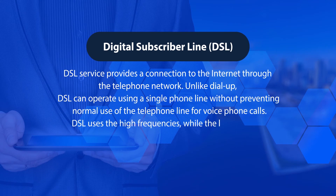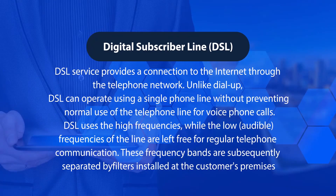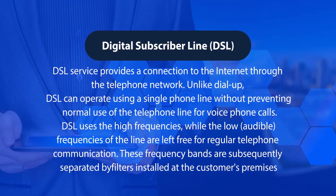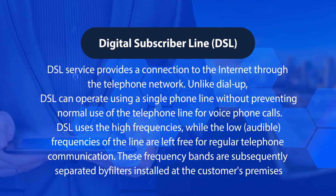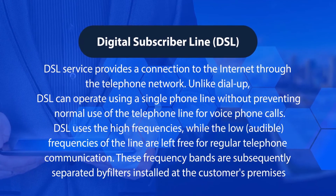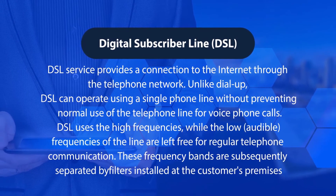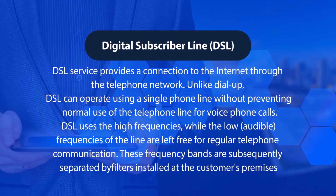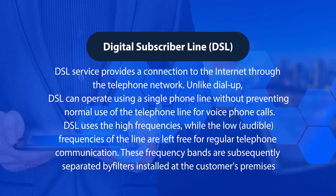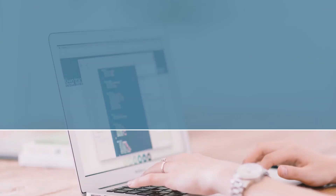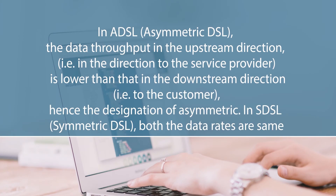DSL (Digital Subscriber Line) provides a connection to the internet through the telephone network. Unlike dial-up, DSL can operate using a single phone line without preventing normal use of that line for voice calls. DSL uses high frequencies while the low audible frequencies are left free for regular telephone connection; these frequency bands are separated by filters at the customer's premises. In ADSL (Asymmetric DSL), upstream data throughput is lower than downstream, hence the designation 'asymmetric.' In SDSL (Symmetric DSL), both data rates are the same.